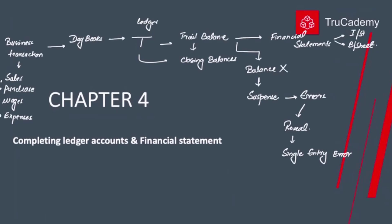What is a single entry error? In the double entry system, each transaction should have one debit and an equal amount of credit. Sometimes we record a debit for 500 but forget to record the credit side, or we record the credit side with a lesser or greater amount than the debit. This is a single entry error, and all such errors will be revealed by the trial balance.